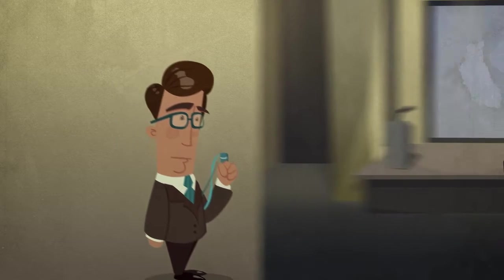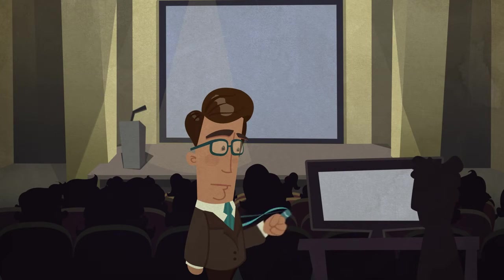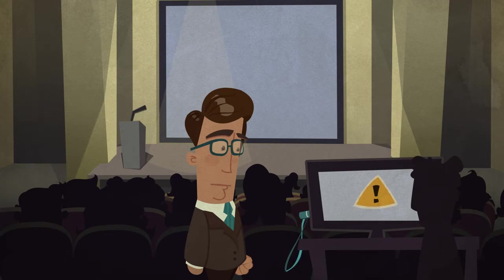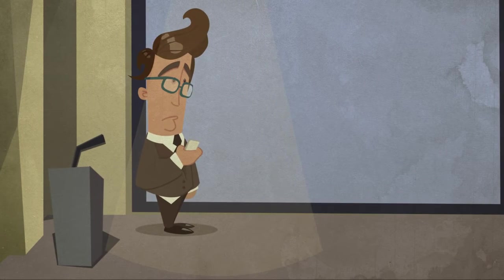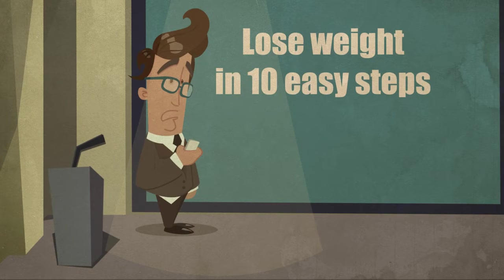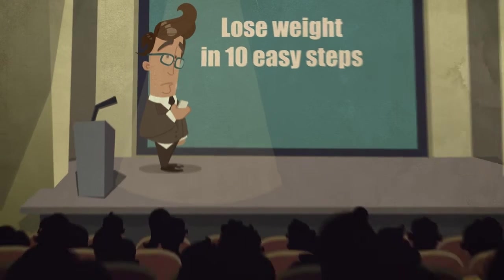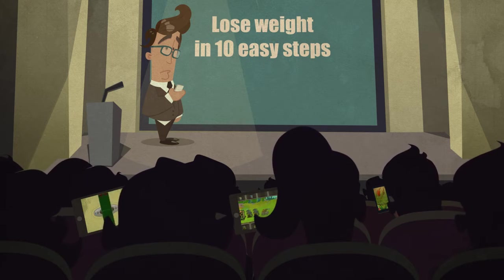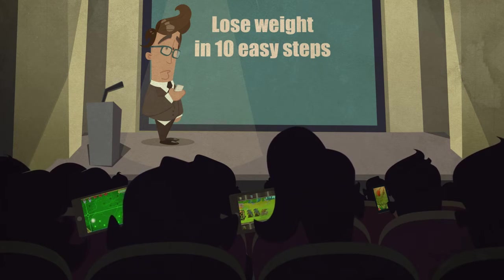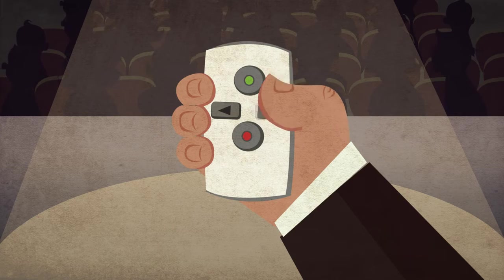But when you get to the venue, the reality is not as you expected. For starters, the computer isn't recognizing your presentation file. Then when you get to the stage, the AV guy loads the wrong visuals on the projector screen. That's a bit embarrassing. Now people in the back are starting to play games on their phones because they can't see the slides. And just when you think it can't get any worse, your remote stops working.